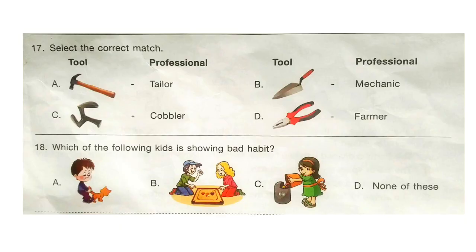Question 17: Select the correct match — here a tool and a professional are given, and you have to find the correct match. The correct answer is option C. Question 18: Which of the following kids is showing a bad habit? The answer is option A — the kid is teasing the cat, which is a bad habit.